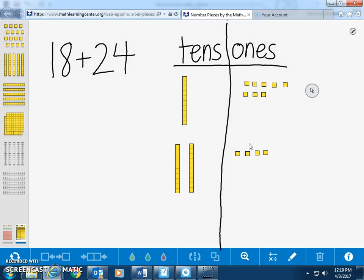Since there are 12 1s in the 1s place, we will compose 10 of the 1s to make a 10 and move it to the 10s place. Now, we have 4 10s and 2 1s.